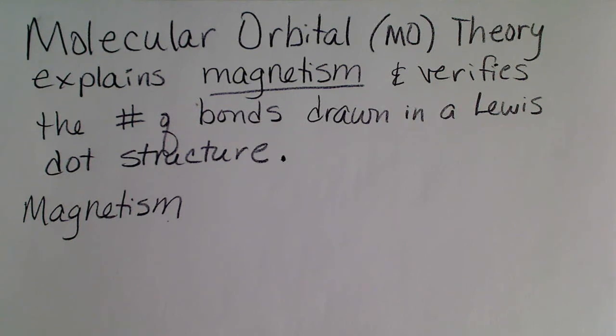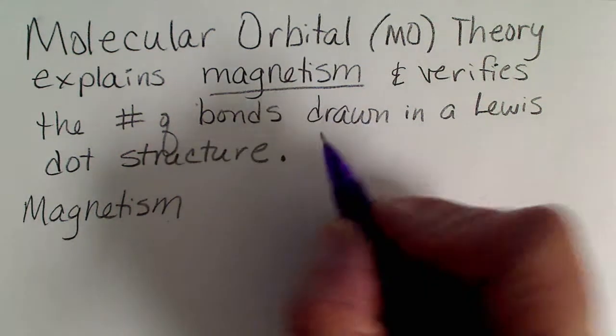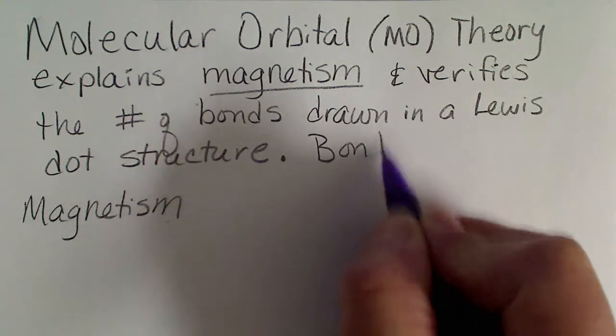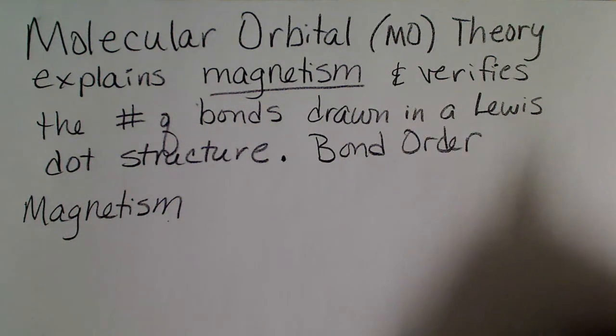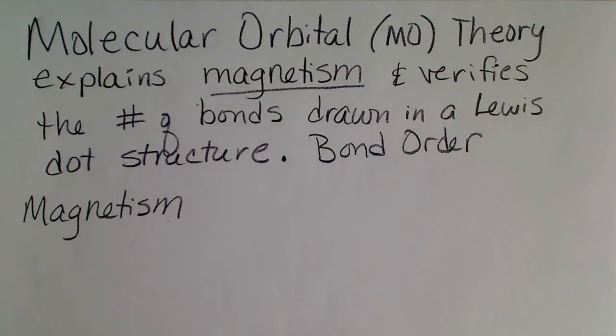So magnetism is one of those properties that will be explained by molecular orbital theory. And then we will also calculate a bond order. The bond order is a simple calculation we're going to do after we have placed all of the electrons in the molecular orbital diagram.